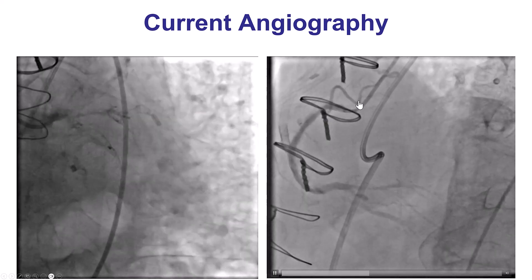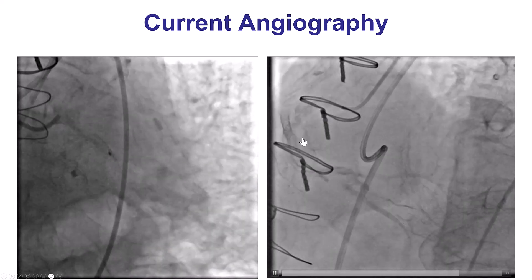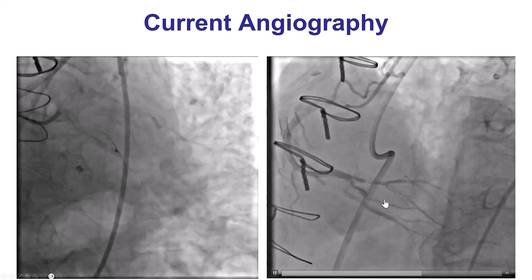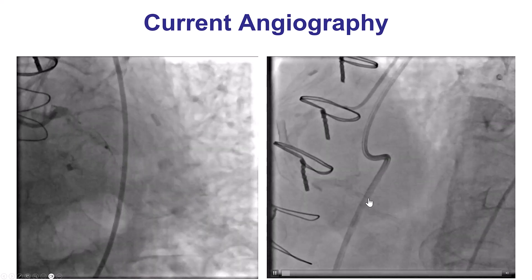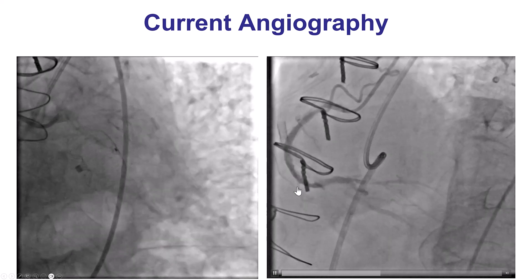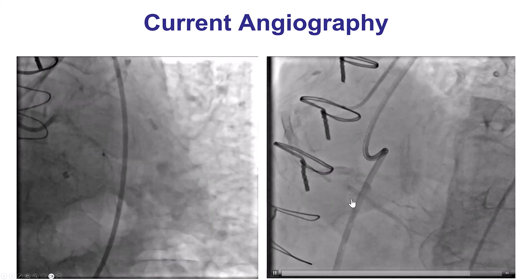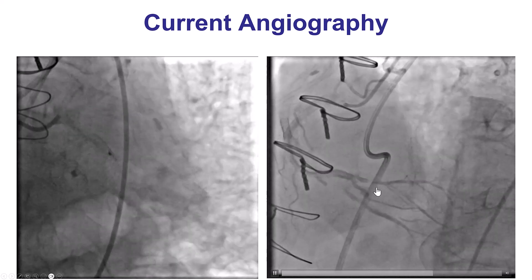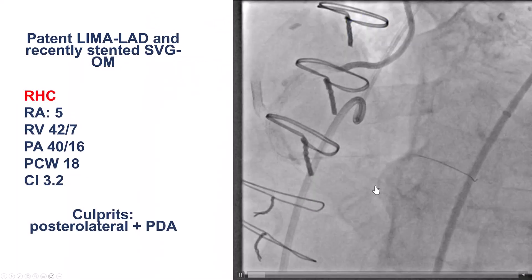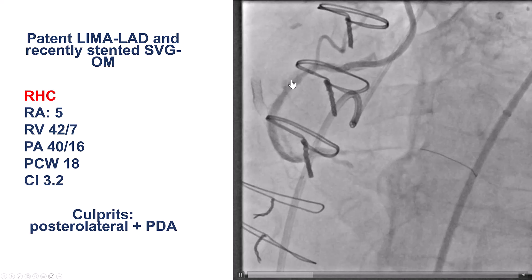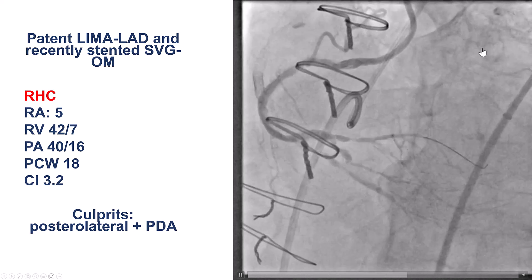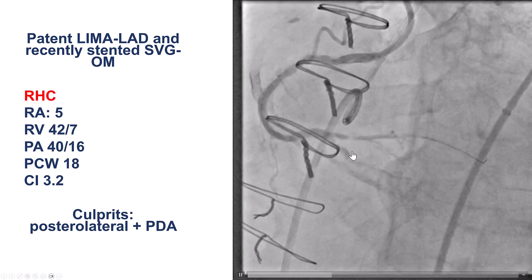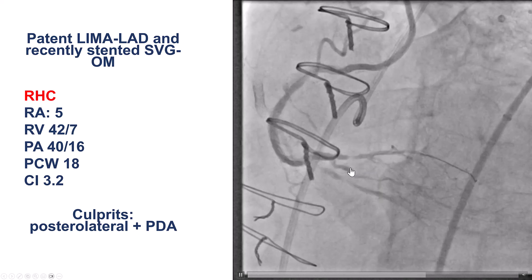This is the current angiogram, which shows that the native right coronary artery remains patent. However, there is a severe lesion at the site of the SVG anastomosis, and in the meantime the vein graft to the PDA had occluded. There was also a significant lesion in the right posterolateral. The vein graft to OM was okay, the LIMA to LAD was okay. So those two lesions — the posterolateral and the PDA — appear to be the culprit.